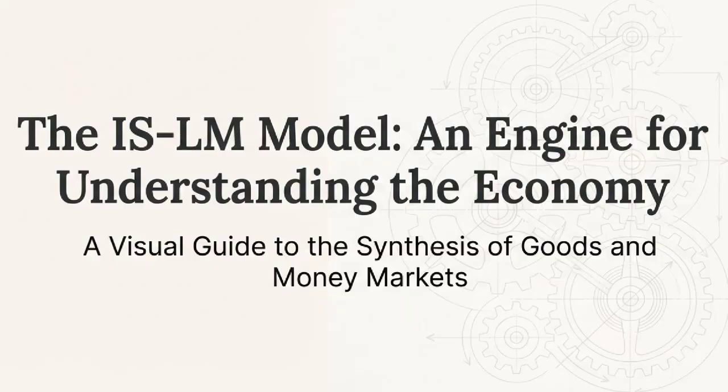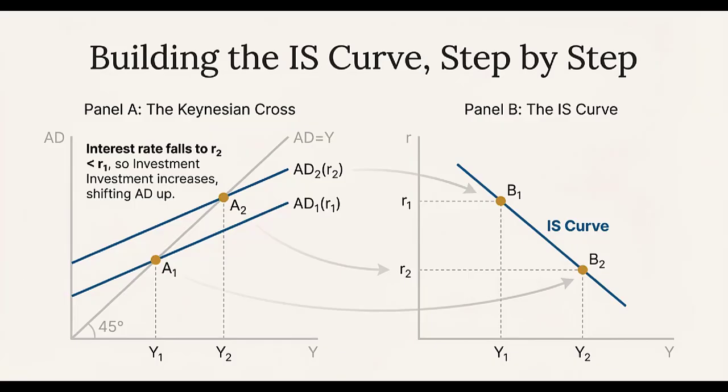If you want to get why a government stimulus doesn't always pack the full punch, this is the place to start. This model lets us properly analyze that famous tug of war between fiscal and monetary policy. We're going to see how government spending can sometimes unintentionally raise interest rates and dampen private investment — that's the crowding out effect, partial crowding out. Understanding that tension is really the core objective today. We'll start with the goods market, which gives us the first half of the model, the investment-saving, or IS, curve.